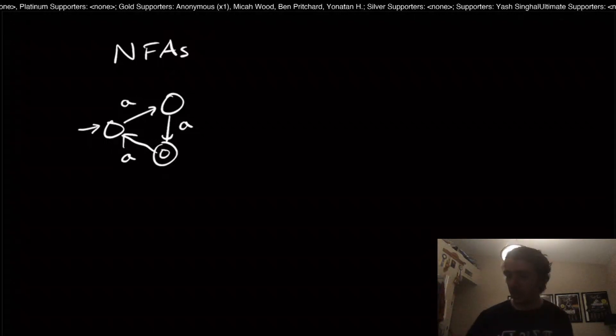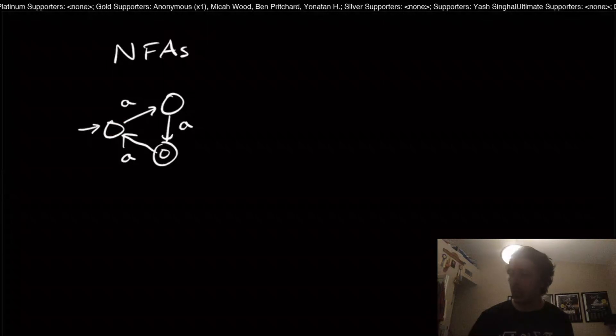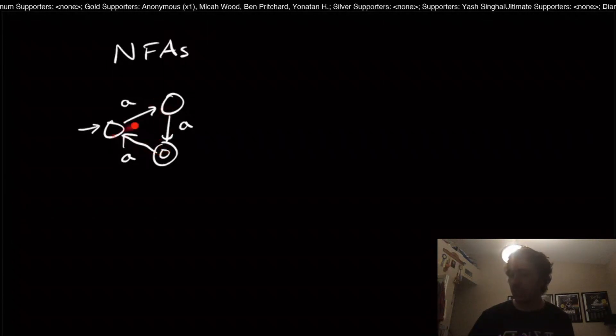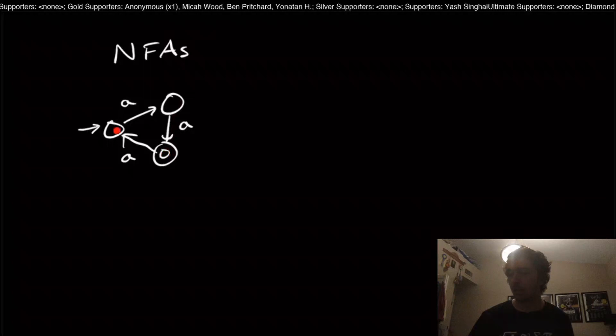And this is, let's just say the alphabet is A, only a symbol A. So this is obviously a DFA because every single state has exactly one transition coming out of it.